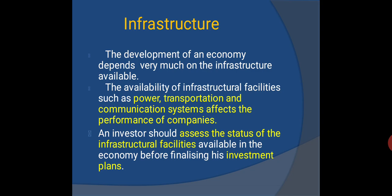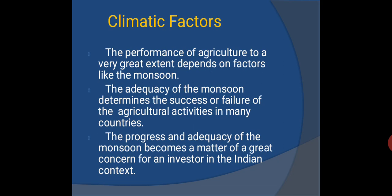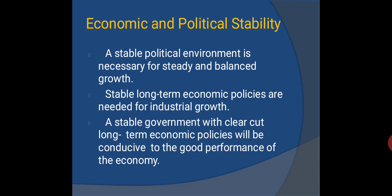Infrastructure: The development of an economy depends very much on the availability of infrastructural facilities such as power, transportation, and communication systems, which affect the performance of companies. Climatic factors: Agricultural performance depends greatly on factors like the monsoon, and the adequacy of monsoon is of great concern for investors, especially in the Indian context. Economic and political stability: A stable political environment is necessary for steady and balanced growth. Stable long-term economic policies are needed for industrial growth, and a stable government with clear-cut long-term policies will be conducive to good economic performance.